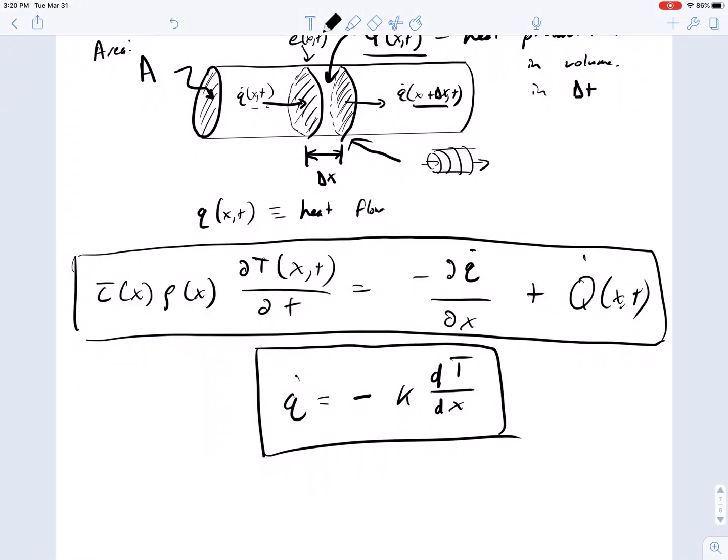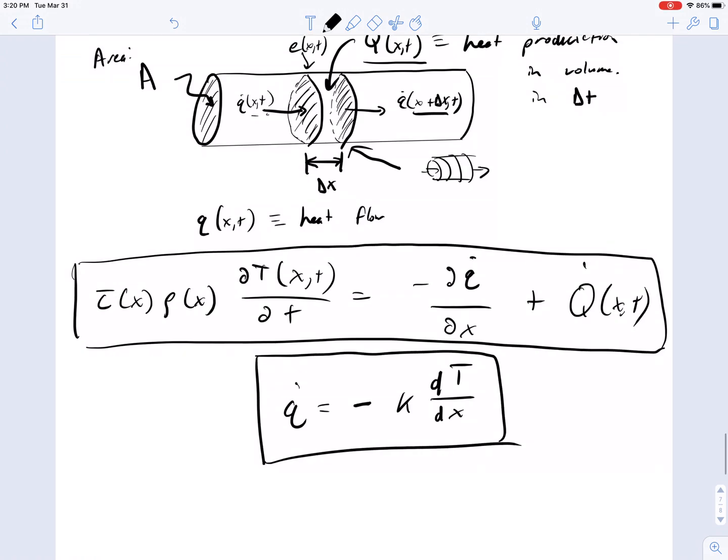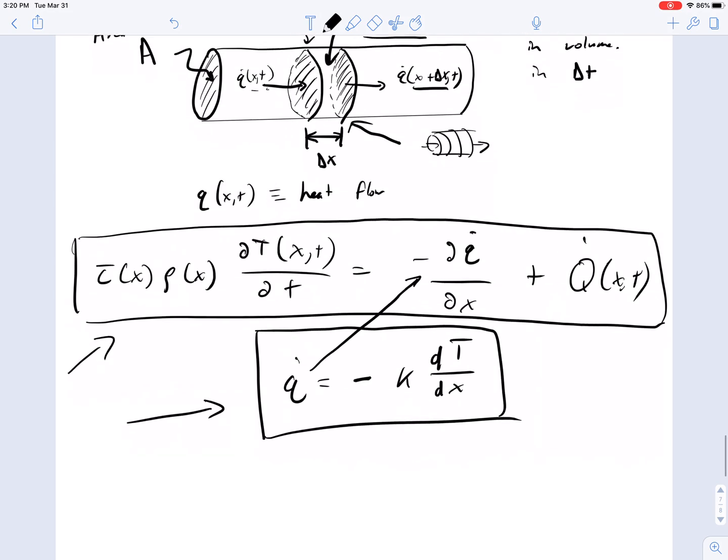Okay, next we have our energy balance equation and our empirical relationship from Fourier's law for conductivity. The next step is to simply do plug and chug and then a little bit of calculus.